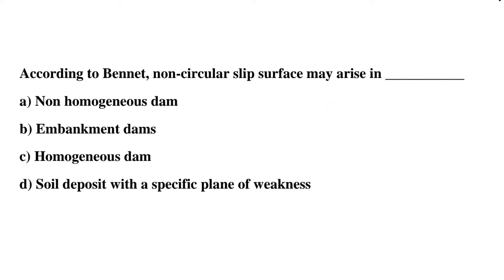Next question: according to Bennett, non-circular slip surfaces may arise in — Option A: non-homogeneous dams, Option B: embankment dams, Option C: homogeneous dams, Option D: soil deposit with specific plane of weakness. The correct answer is Option C, homogeneous dam.